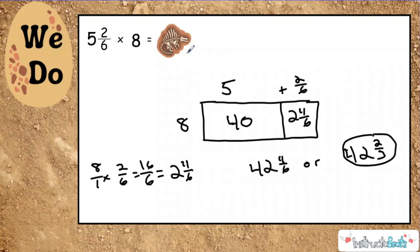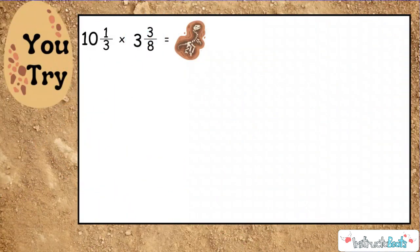So now I think that my fossil up here really represents 42 and 2/3, and luckily there's no dinosaurs trying to scare us this time. Let's take a look at a you try problem. So our you try problem is 10 and 1/3 times 3 and 3/8, and again we're trying to figure out what does this fossil really represent. So go ahead and pause the video, try this one by yourself, and then push play to check your work.